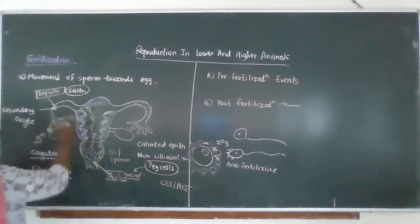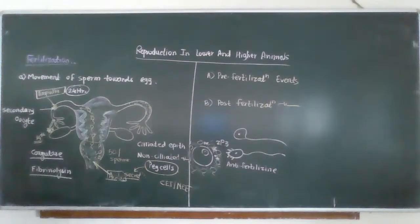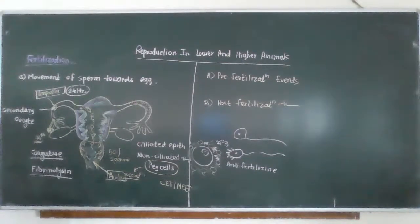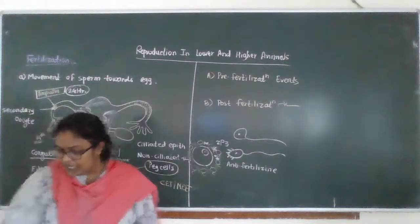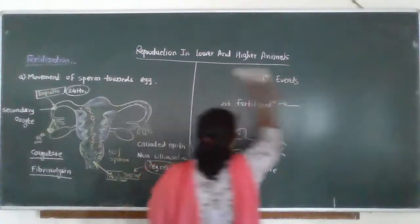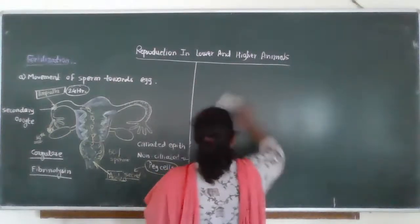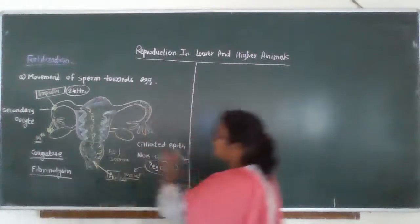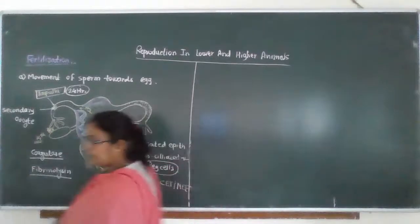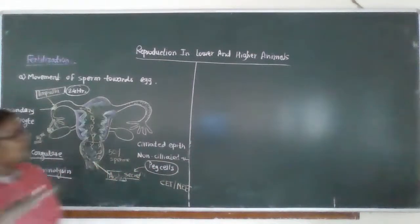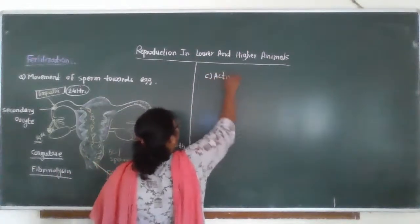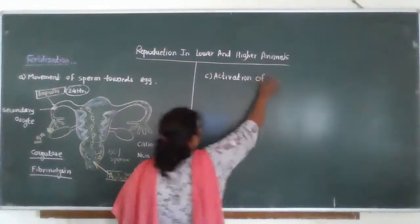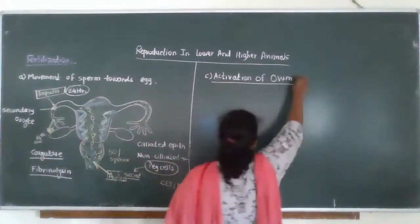During this moment the sperm gets capacitated by the fluid secreted by the peg cells — the non-ciliated epithelial cells. The third step is the activation of the ovum. So the sequence is: insemination, then arrival of sperm towards the secondary oocyte, and then the activation of ovum.